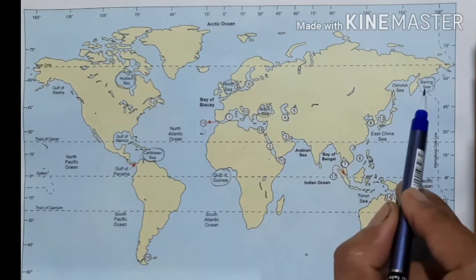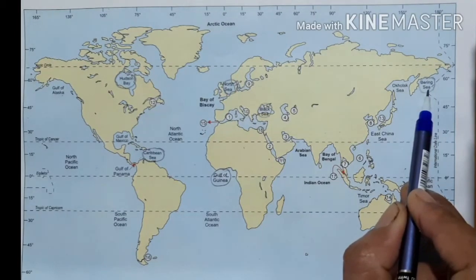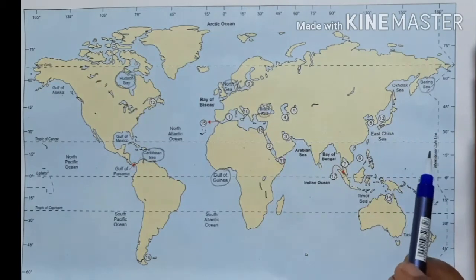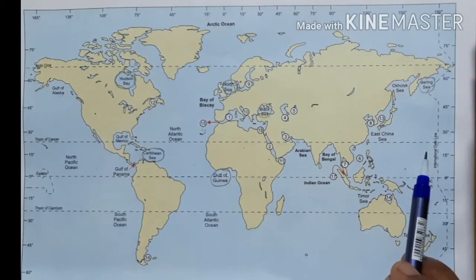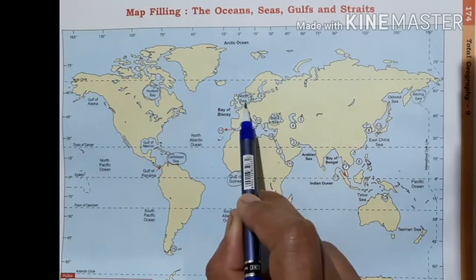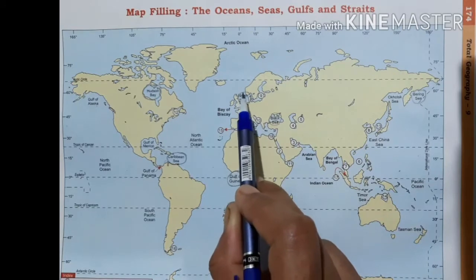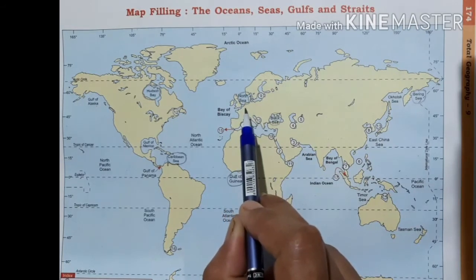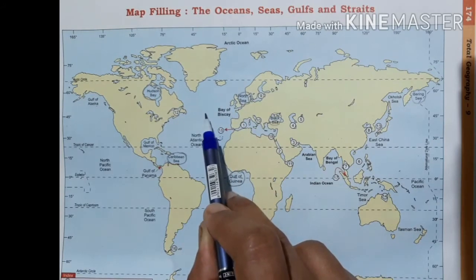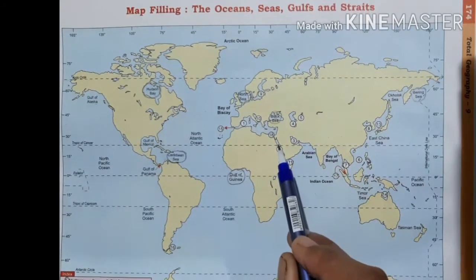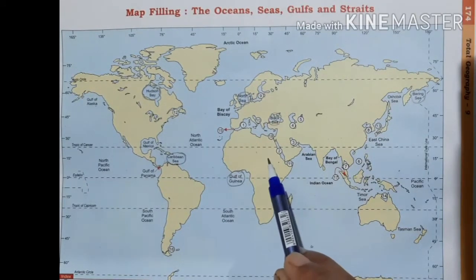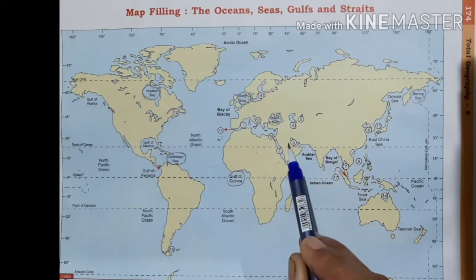The Bering Sea is located along the margins of the Asian continent and is a marginal sea of the Pacific Ocean. The North Sea is located between the island groups of Europe and is also a marginal sea of the Atlantic Ocean. The Red Sea is a marginal sea of the Indian Ocean, bounded by Africa and the Asian continent.